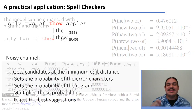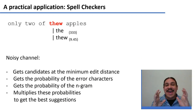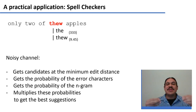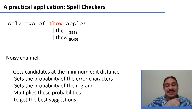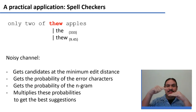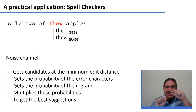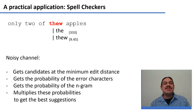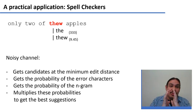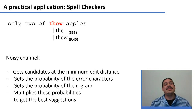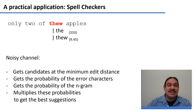We finally have a system that captures the intuition that some words make sense only in certain contexts, and the spell checker takes that into account when making spelling suggestions. The noisy channel system gets candidates at minimal edit distance plus the word itself, gets the probability of the errors, gets the probability of the n-grams — whether unigram or trigram — and multiplies those probabilities to get the best suggestions.